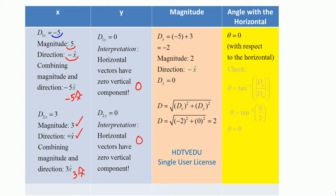Now we add the x-component of d1 and the x-component of d2. Negative 5 plus 3 equals negative 2. The magnitude is 2 and the direction is horizontally to the left — this makes sense. We have a large displacement to the left and a small displacement to the right, so the net displacement is negative 2. The y-component is 0.